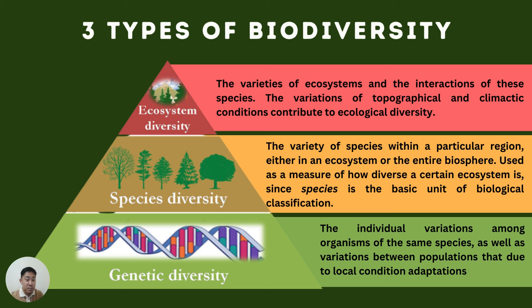Even the type of plants found in those ecosystems vary because of these conditions. So those are the simplest explanations of the three types of biodiversity: genetic diversity, species diversity, and ecosystem diversity.